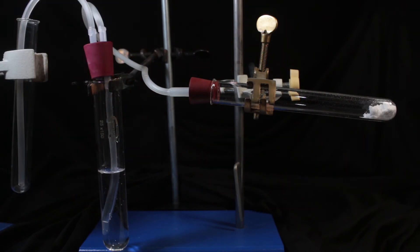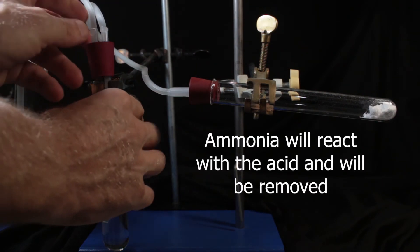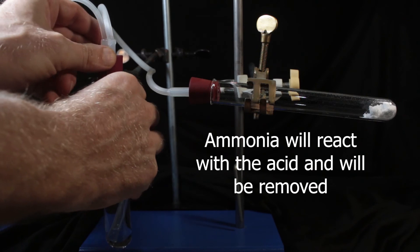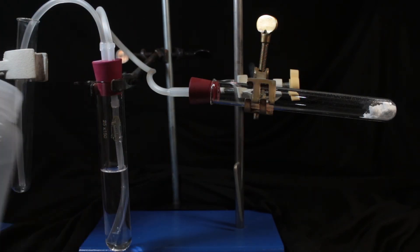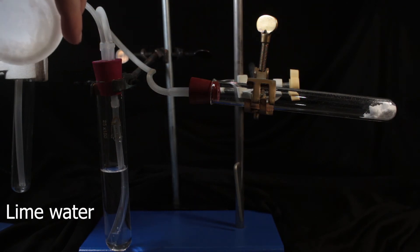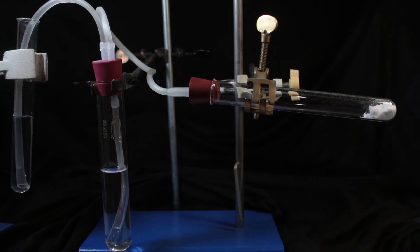Ammonia, being alkaline, will react with the acid and will be removed. And carbon dioxide would be left, and it's going to bubble through lime water on the extreme left. Here, let's run our setup by heating up the white solid.